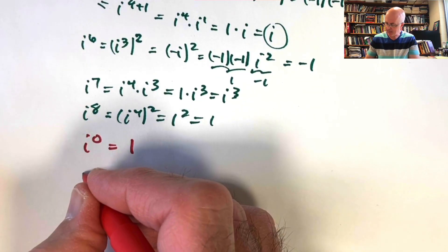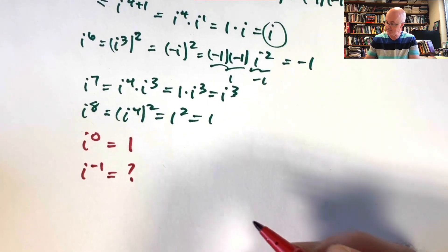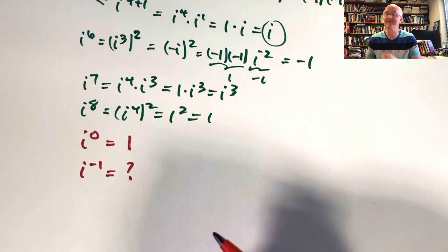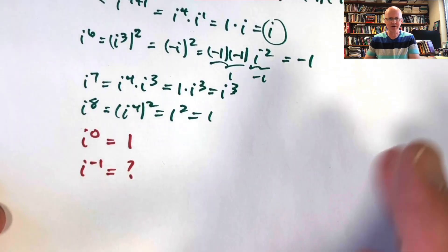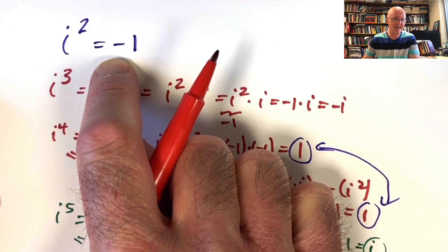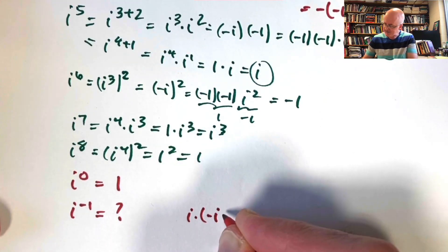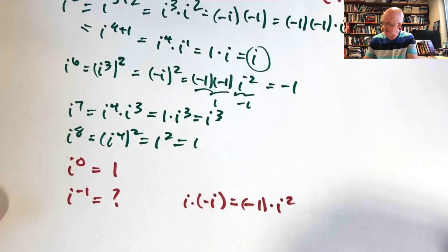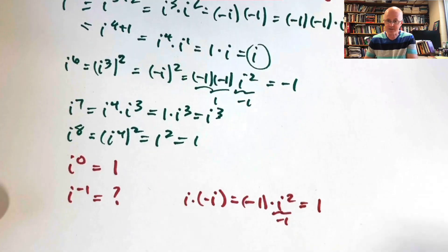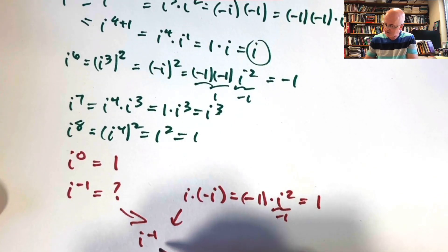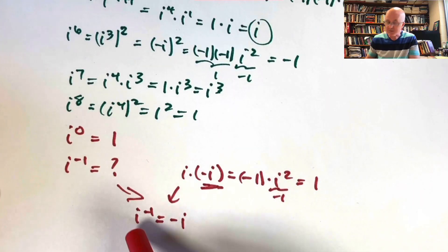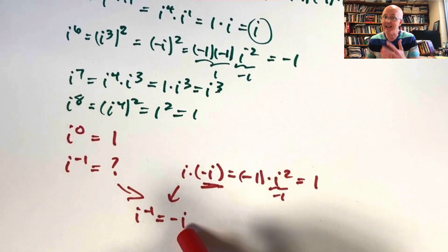What about negative powers of i, like i to the negative one? In general, raising a non-zero number to the negative one power means finding its multiplicative inverse — the thing you multiply it by to get positive one, the multiplicative identity. We know i times i is negative one. So i times negative i gives positive one, since we can factor out the negative sign and write it as negative one times i squared, which is negative one times negative one — positive one. Therefore i to the negative one is negative i. Amazing: i is a number whose multiplicative inverse is also its additive inverse.